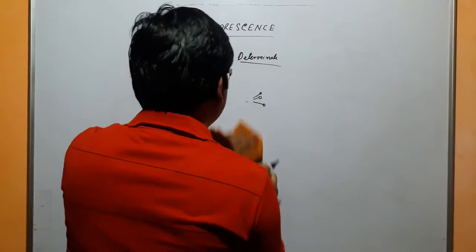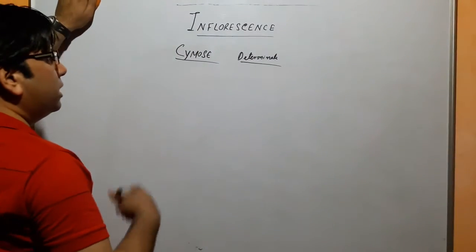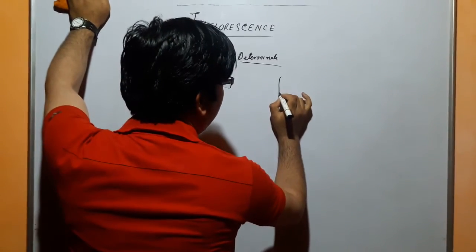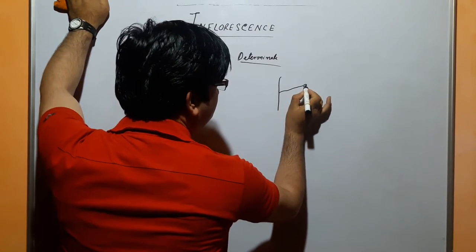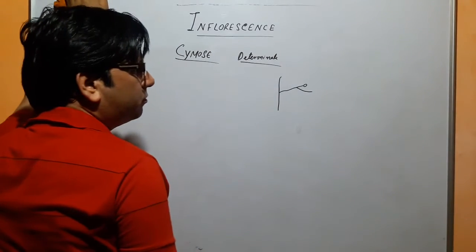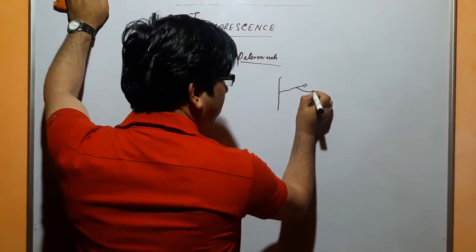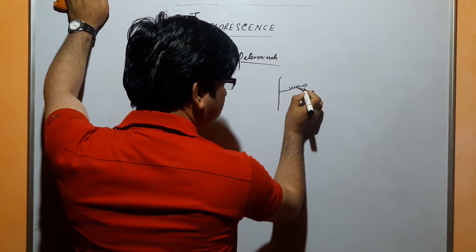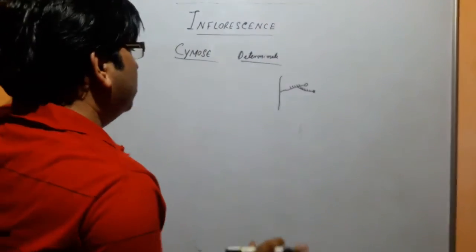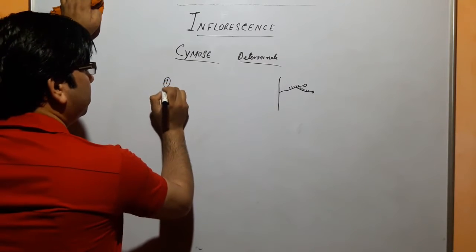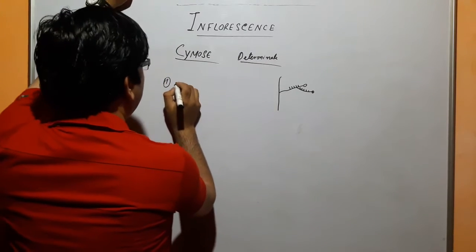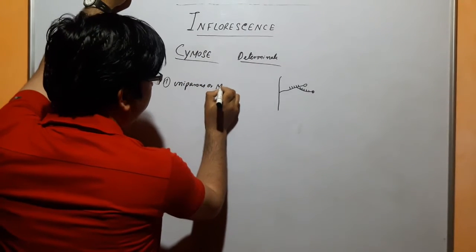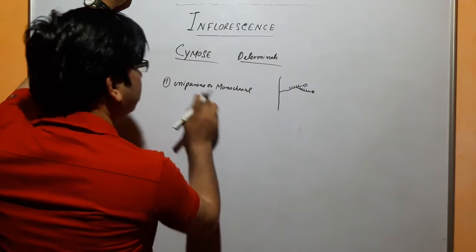Based on branching, we have five types — we can say three types and then two more types. If this growth is like this plant, this peduncle, there's a flower at the end. And it branches from below. It's also a flower and it's stopped. These are flowers on this branch. There is one branch. That is the first type, called uniparous, and monochasial type of cymose.